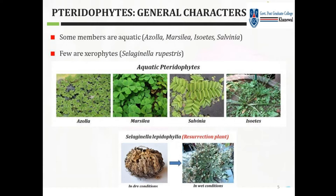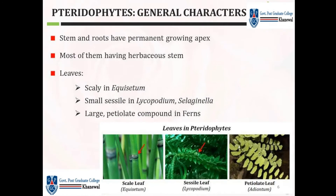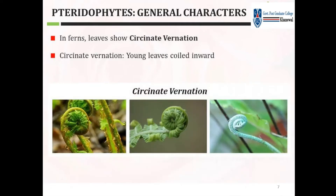Most have herbaceous stems. Leaves vary: scale-like leaves in Equisetum, sessile leaves in Lycopodium, and petiolate leaves in Adiantum. In ferns, leaves show circinate venation — meaning the leaves are coiled or curled inward. This characteristic of circinate venation is shown by Tracheophytes.